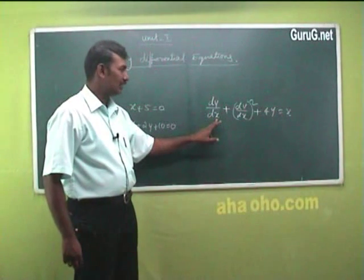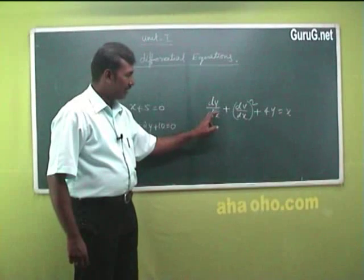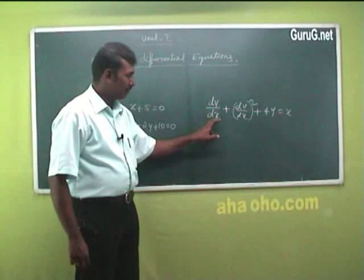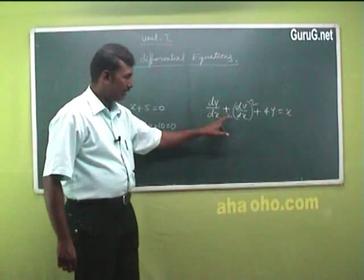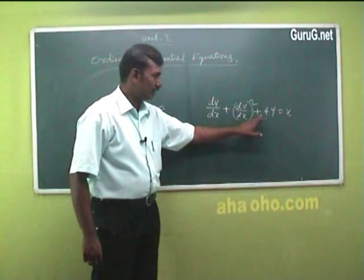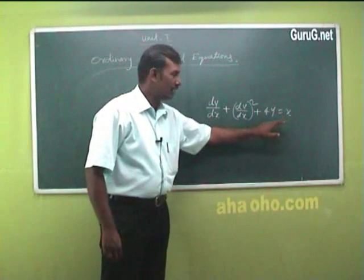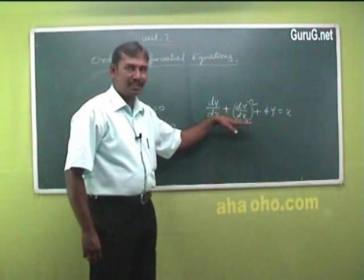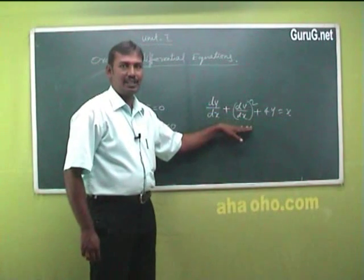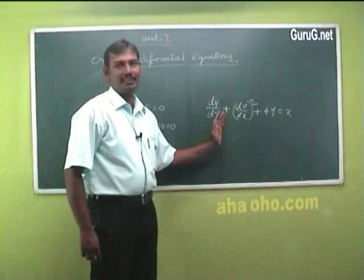This is the first order derivative. dy/dx squared plus 4y equal to 0 — this is a differential equation. This is a linear equation.